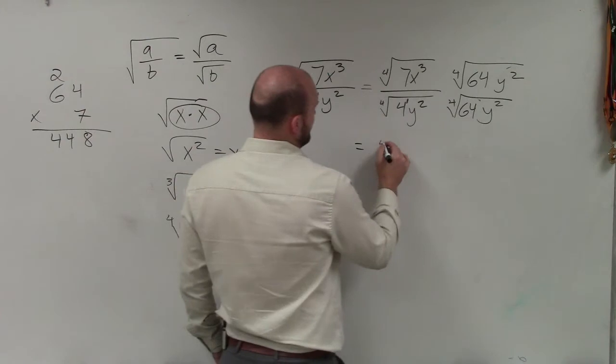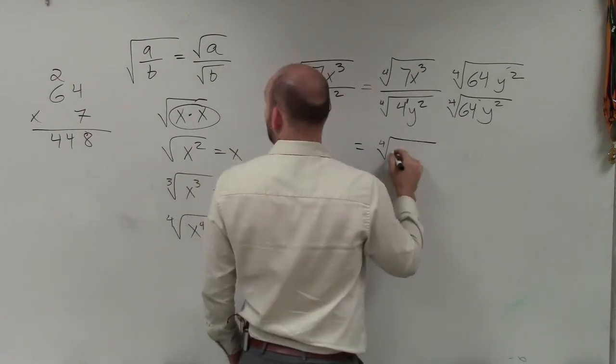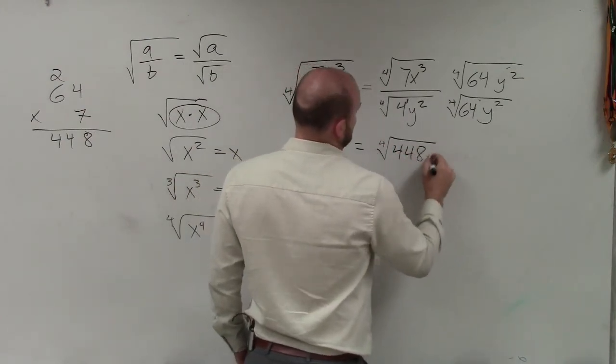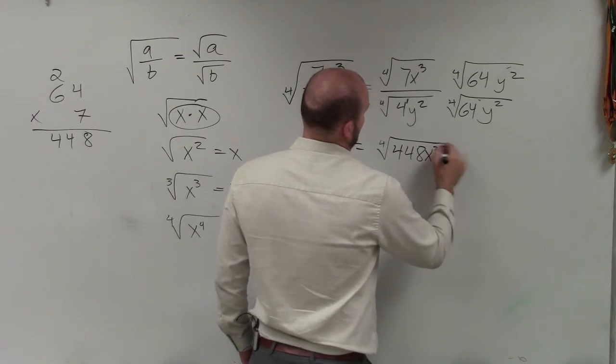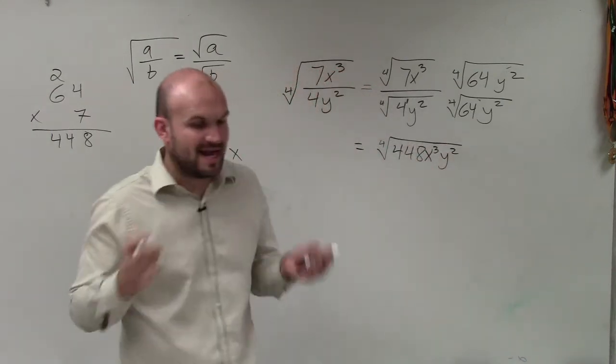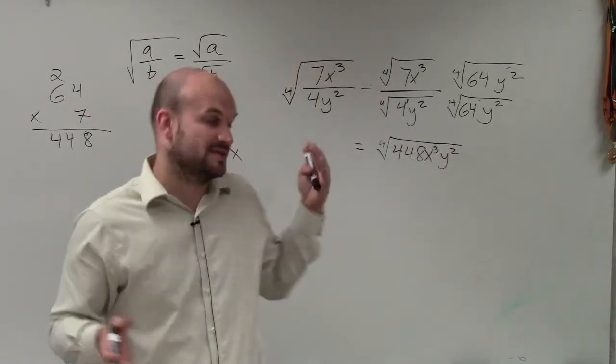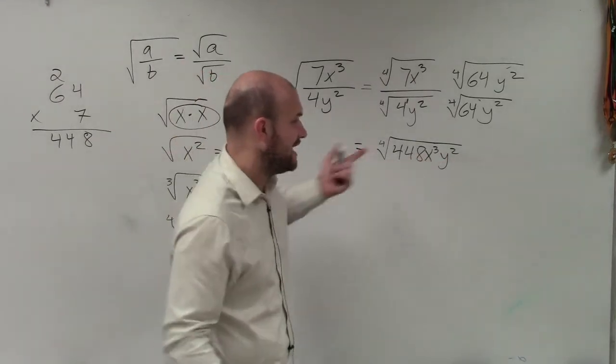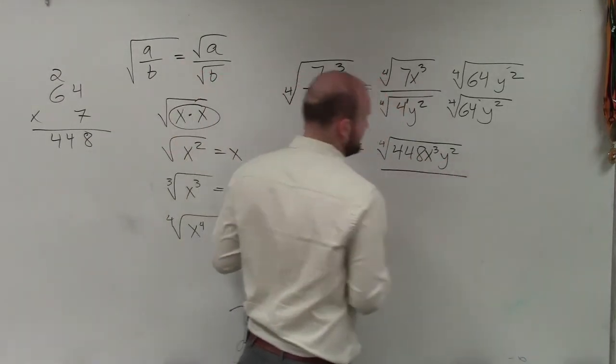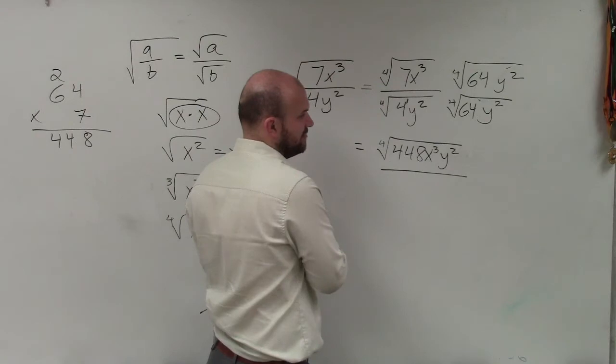OK. I do have my calculator, sweet. So therefore, I have the fourth root of 448 times x cubed y squared. Now remember, I would have to have an x power to the fourth power to take the fourth root of it. These I do not have, so therefore, I can't simplify that any further.